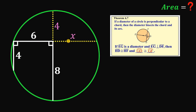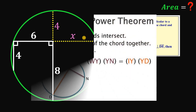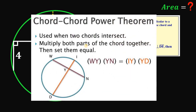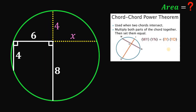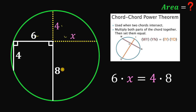Next, let's extend the six-unit segment and call the unknown part x. To find x, we use the chord-chord power theorem: when two chords intersect, we multiply both parts of each chord and set them equal. Using this theorem: six multiplied by x equals four multiplied by eight.